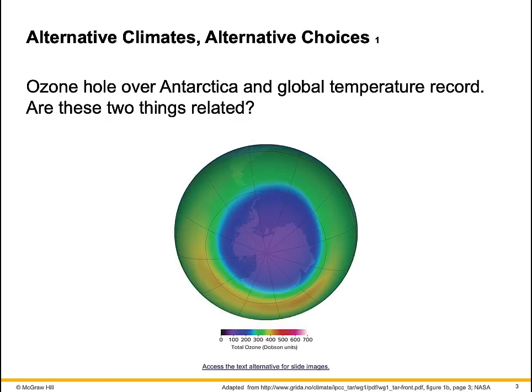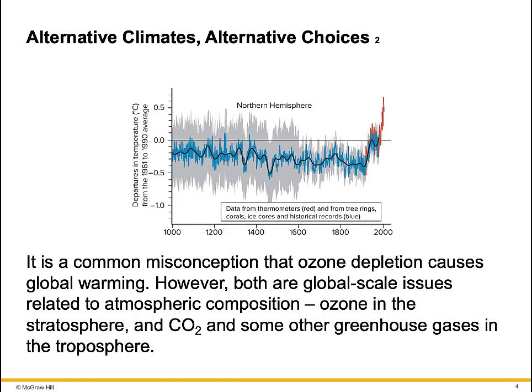The ozone hole over Antarctica and the global temperature record — are these two things related? It is a common misconception that ozone depletion causes global warming. However, both are global scale issues related to atmospheric composition: ozone in the stratosphere, and CO2 and other greenhouse gases in the troposphere.